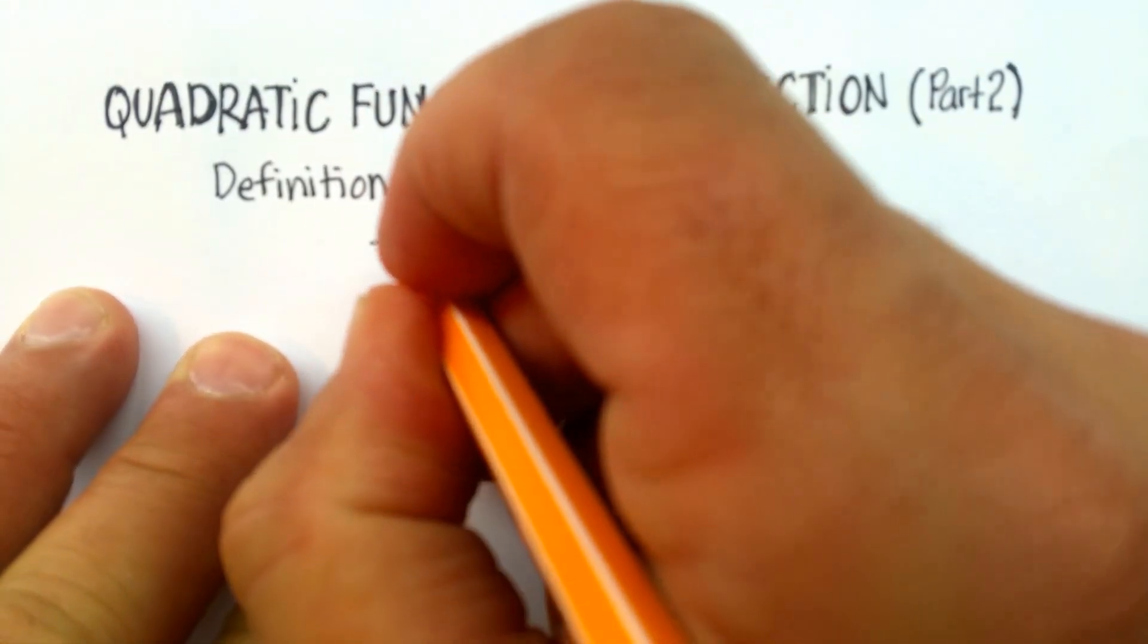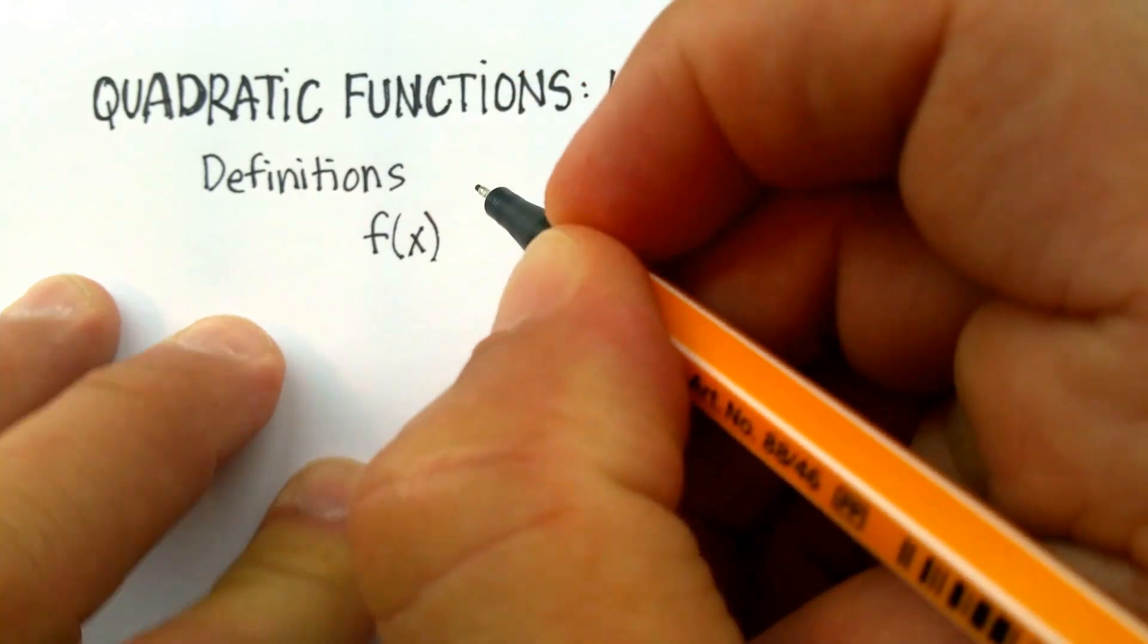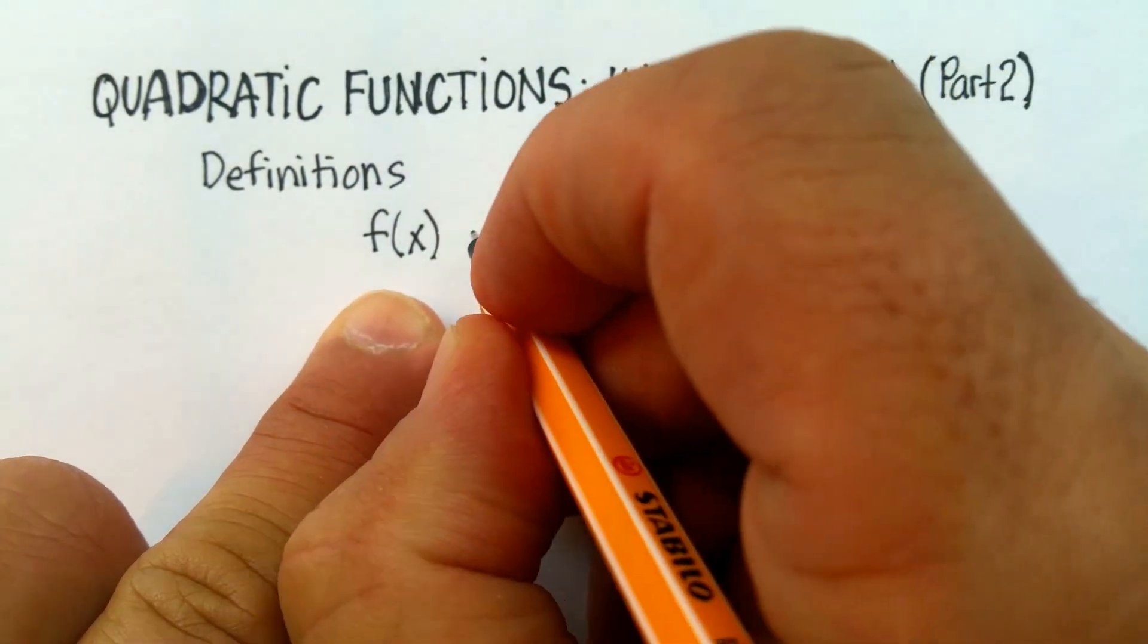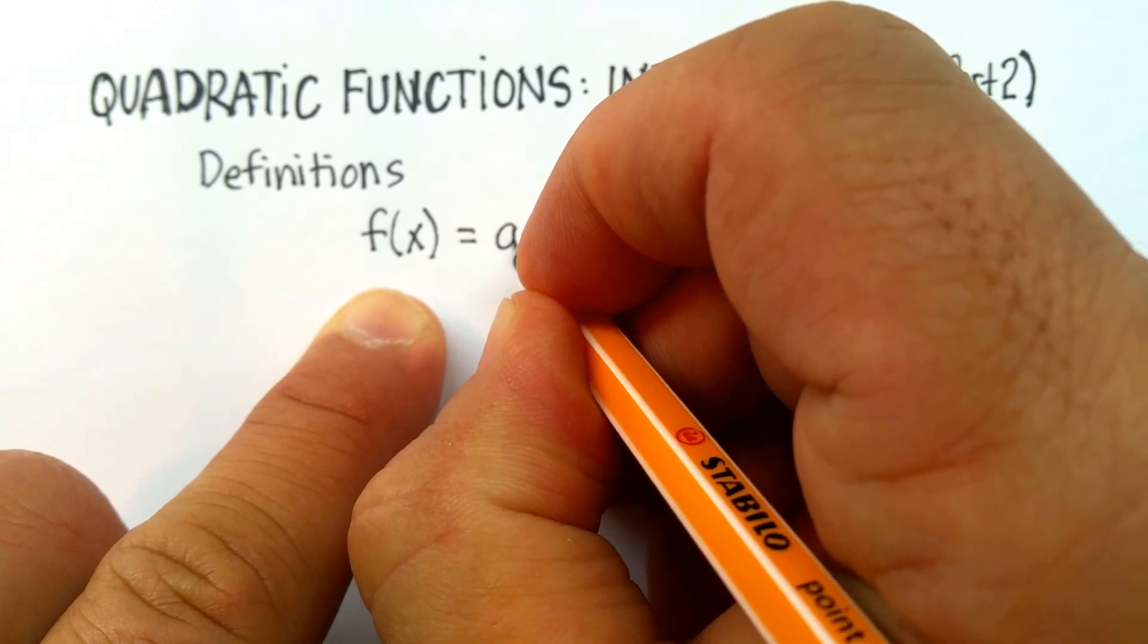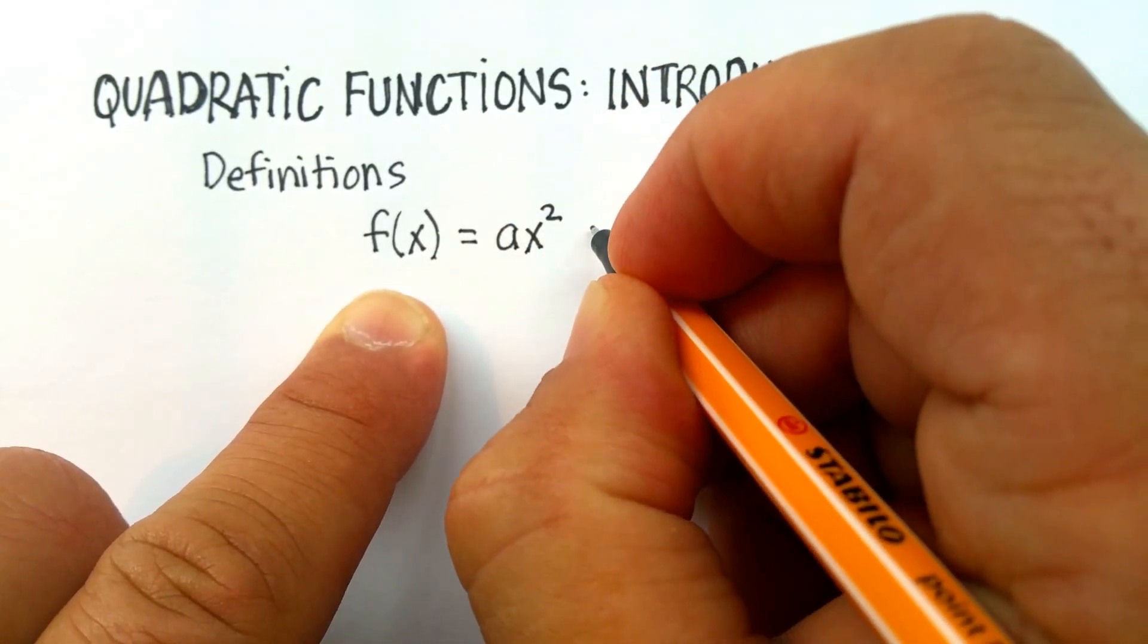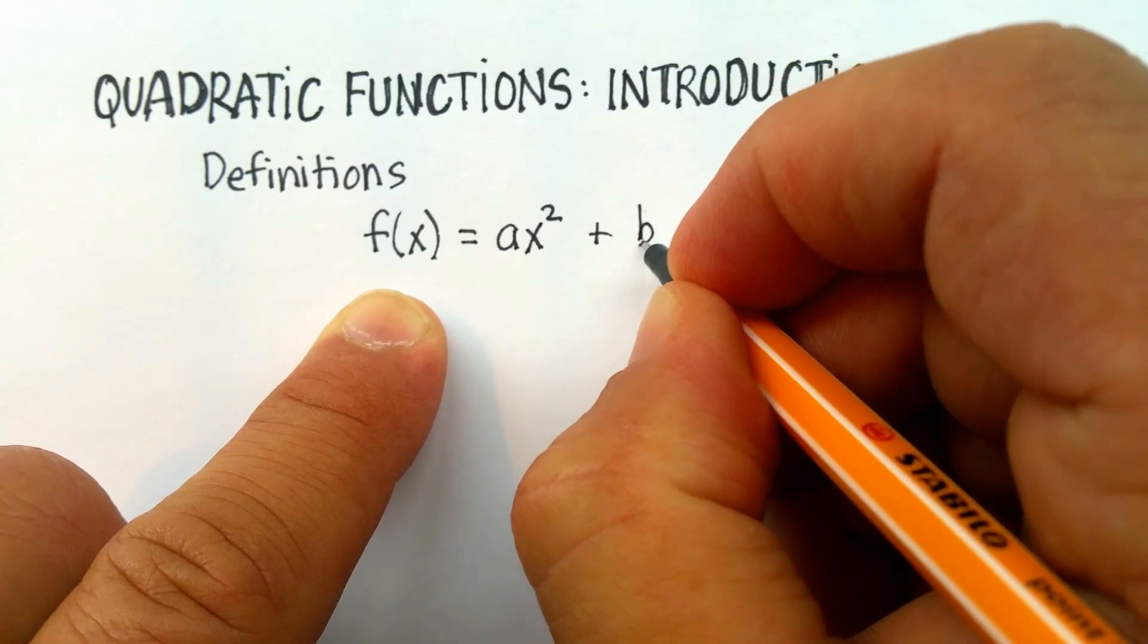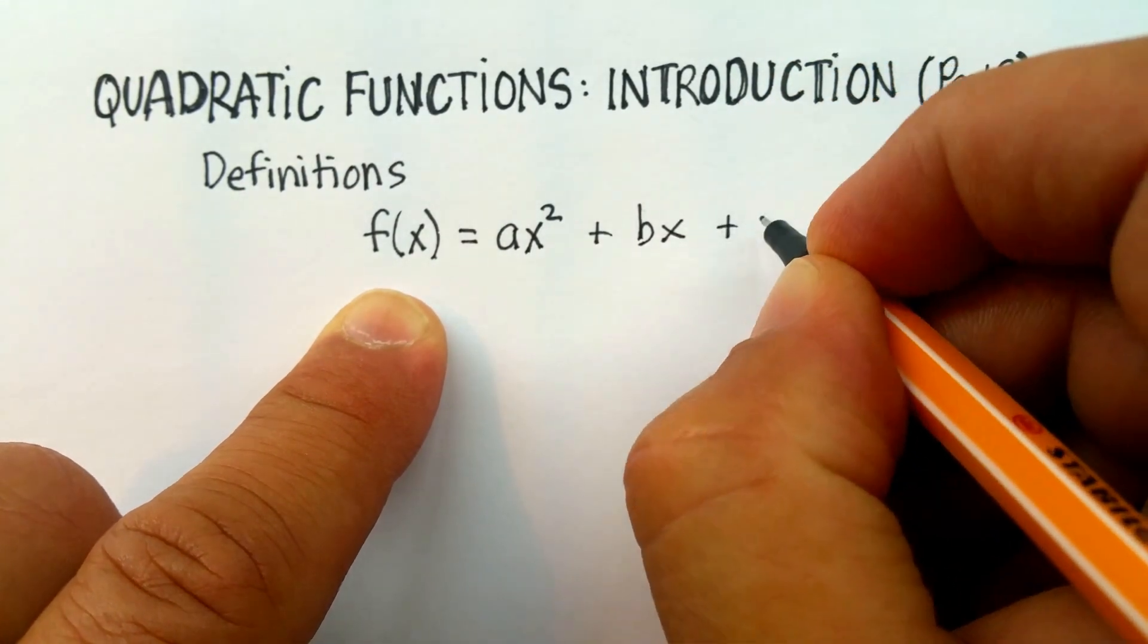The standard form for a quadratic function is f of x or y. Remember that y and f of x are the same thing. It's equal to ax squared plus bx plus c.